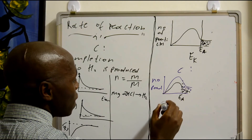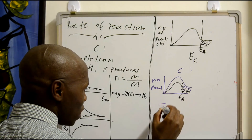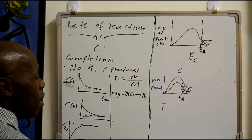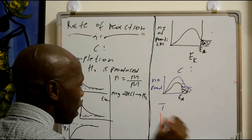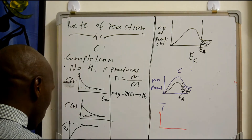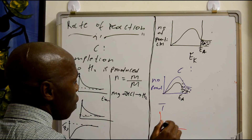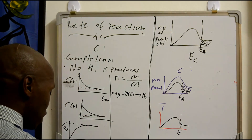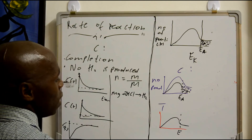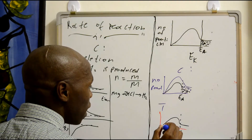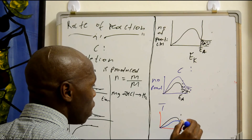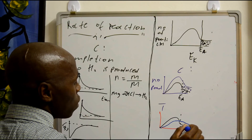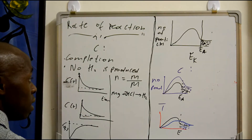Now you increase the temperature. When you increase the temperature, the graph shifts — the graph is like a curve. So when you see the original graph, there are fewer moles. Because the particles expand, the graph shifts so that the number of particles exceeding the activation energy increases. That is how the reaction rate increases.